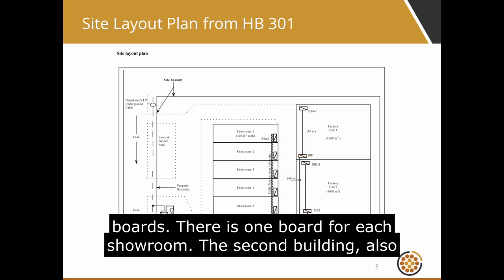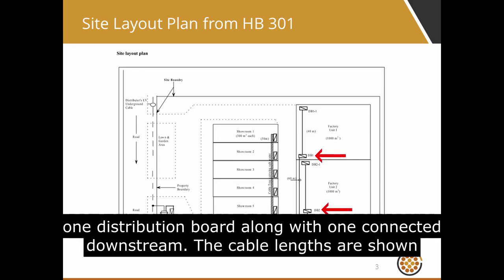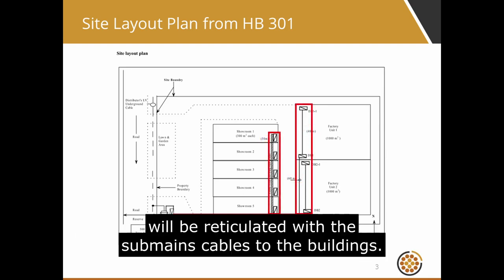The second building, also connected to the metering panel, contains two factory units. Each factory unit has one distribution board, along with one connected downstream. The cable lengths are shown in the diagram, which will be important later for cable sizing. A protective earth cable will be reticulated with the sub-mains cables to the buildings.